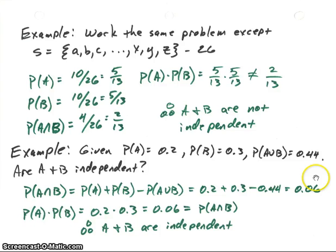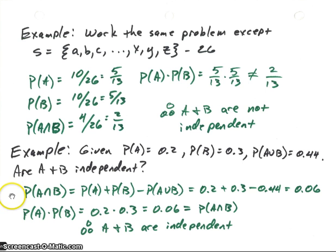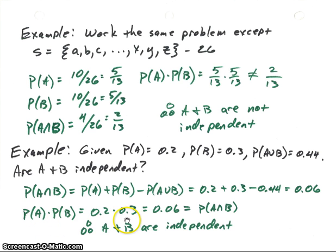Let's do one more problem. We're given the probability of A is 0.2, the probability of B is 0.3, and the probability of A union B is 0.44. The question is: are A and B independent? We're going to find the probability of A intersect B, and then probability of A times probability of B, and see if they're equal. Probability of A intersect B equals probability of A plus probability of B minus probability of A union B — plugging in those values, we get 0.06. Probability of A times probability of B is 0.2 times 0.3, which also equals 0.06. That is equal to our probability of A intersect B, so therefore A and B are independent. The main way to prove independence is when the probability of A intersect B equals the probability of A times the probability of B.